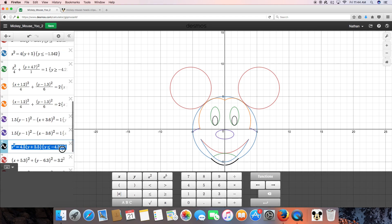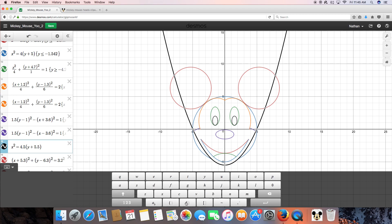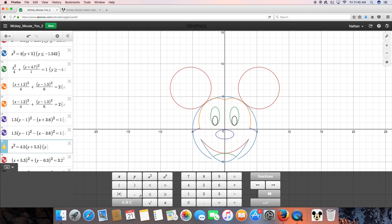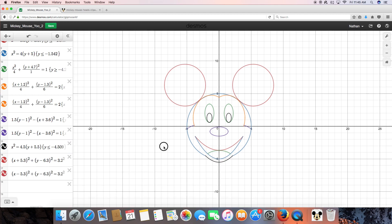Now the chin is a parabola, and the equation I used was x squared equals 4.5 parentheses y plus 5.5. Now, here's our parabola, but it conflicts with the image. In order to get rid of that, we have to add a restriction so it looks less like a parabola and more like a chin. And the restriction I used was y is less than or equal to negative 4.509. And there you have it, Mickey Mouse.